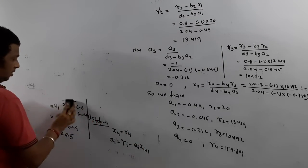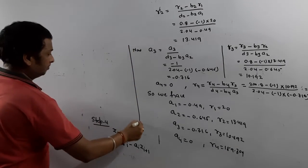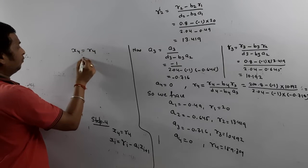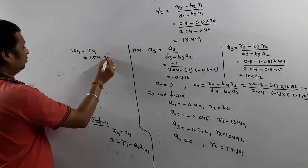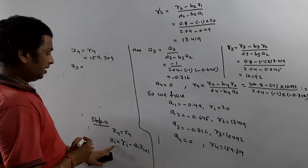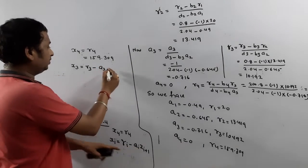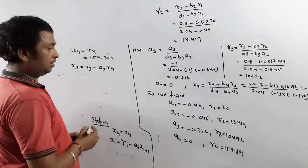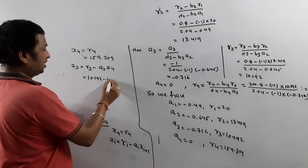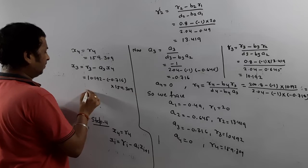Step 4 — back substitution. X4 = R4 = 159.309. Now X3: put i = 3, so X3 = R3 − A3 × X4. R3 = 10.192, A3 = −0.716, X4 = 159.309. When you simplify, you get X3. Please calculate this value.